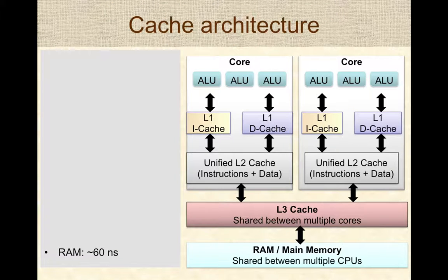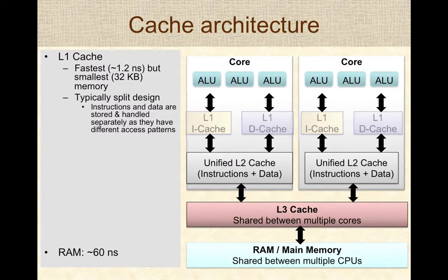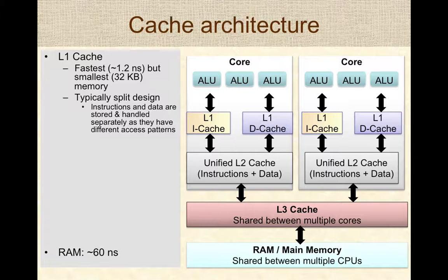Looking at an actual cache architecture: a typical CPU has three tiers of caches. The first tier, the L1 cache, is typically the fastest but smallest. It uses a split design because at this level, instructions and data have very different localities of reference and access patterns, so they are split into separate instruction and data caches.